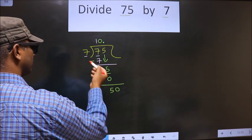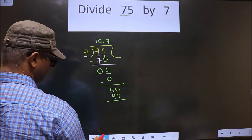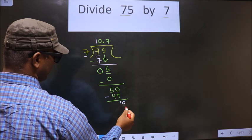A number close to 50 in 7 table is 7 7s 49. Now you subtract and it goes on.